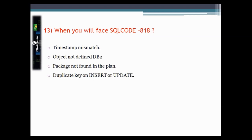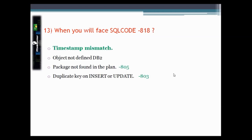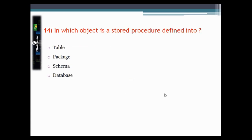This question asks when you will face SQLCODE -818. The answer is we get SQLCODE -818 whenever there is a mismatch between the timestamp of the plan and the package. We get SQLCODE -805 when a package is not found in the plan, and SQLCODE -803 when a duplicate key on insert or update is encountered.